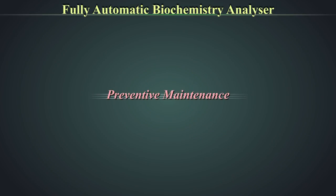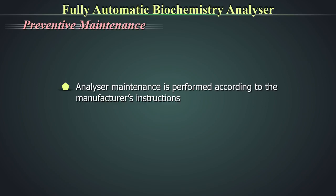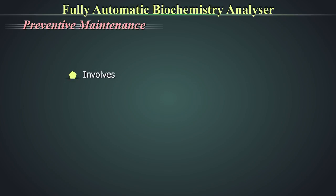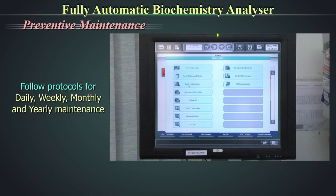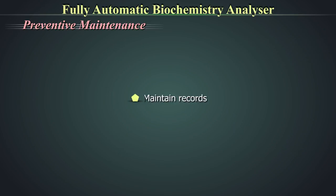Preventive maintenance: Analyzer maintenance is performed according to the manufacturer's instructions. Usually the machine gives reminders of the maintenance schedule. Maintenance involves regular check of the aspiration system, optical system, and measurement system, as well as replacement of parts undergoing wear and tear. Protocols for daily, weekly, monthly, and yearly maintenance should be followed per manufacturer's guidelines, and records of all maintenance carried out should be kept.